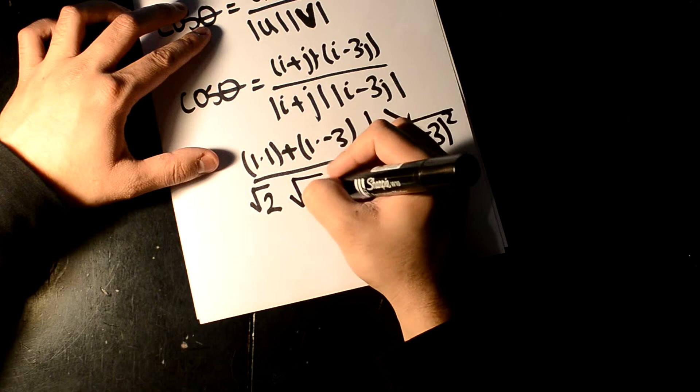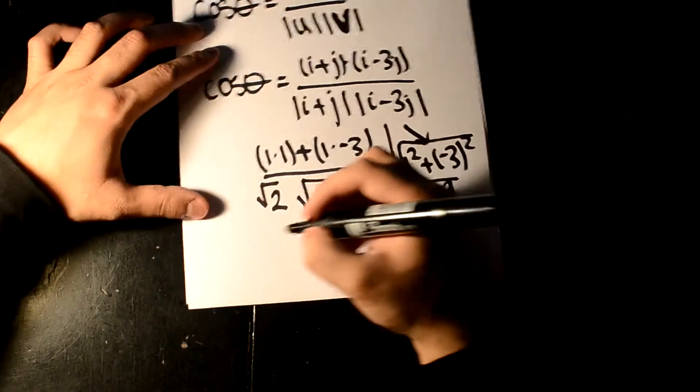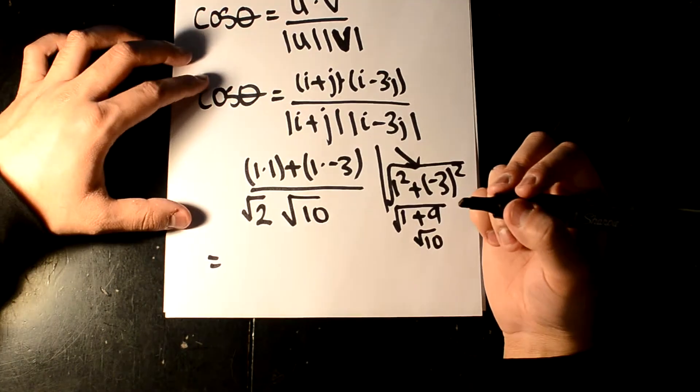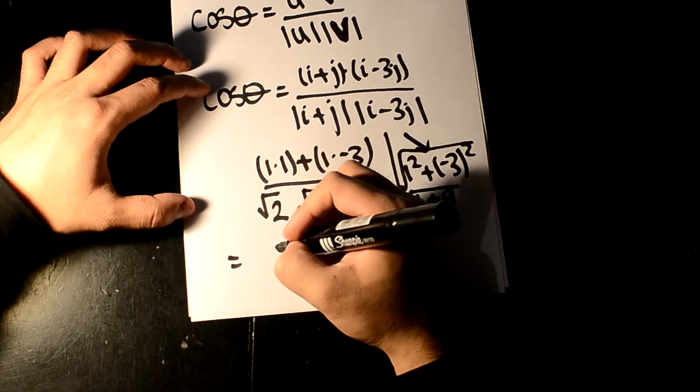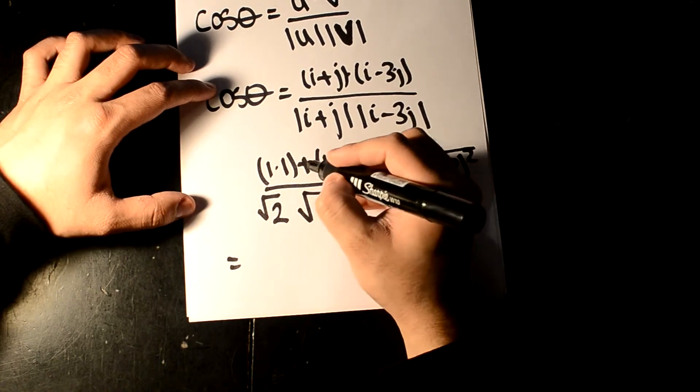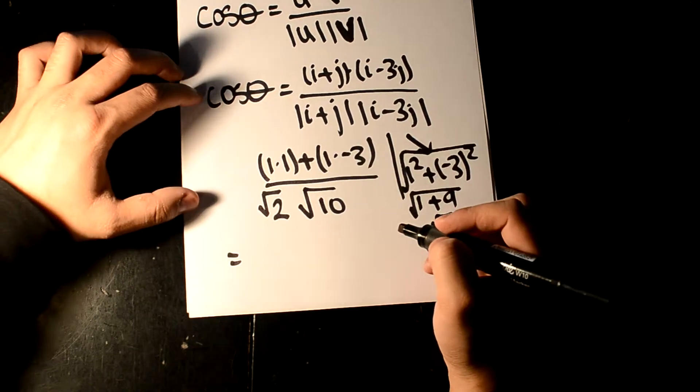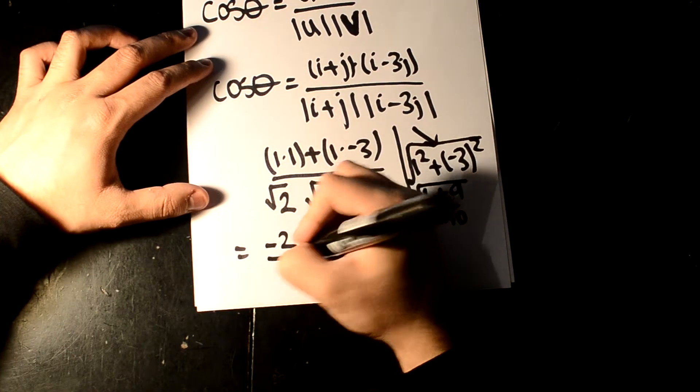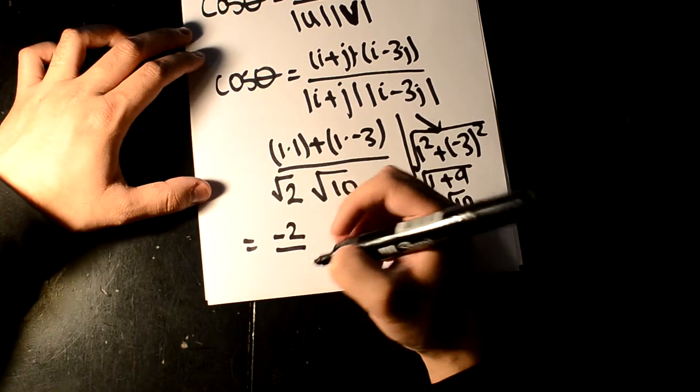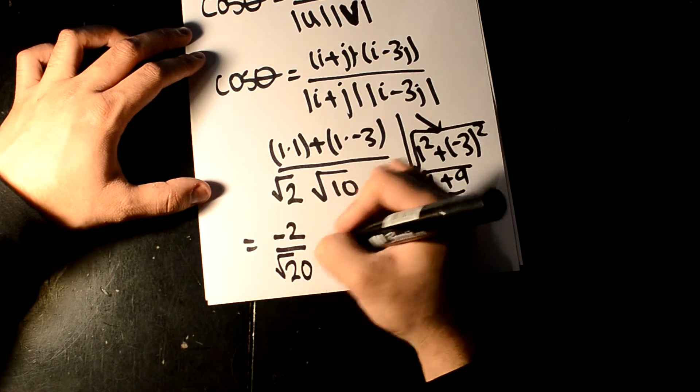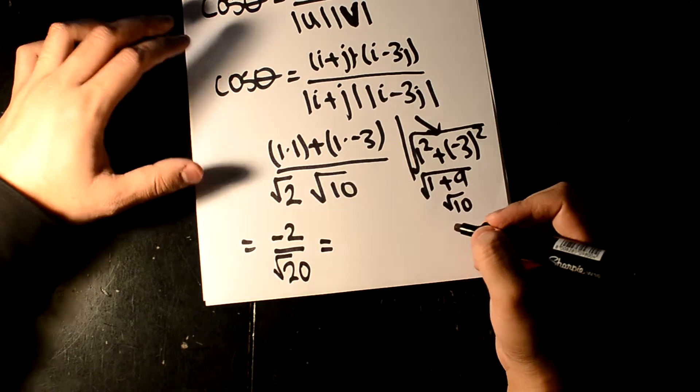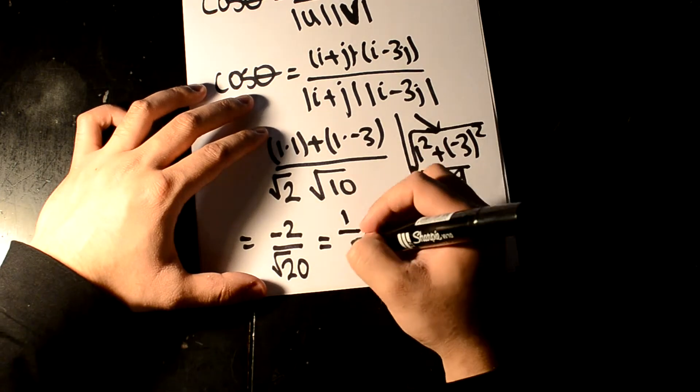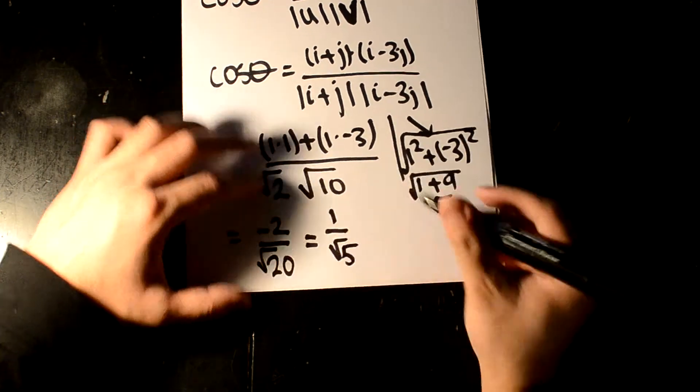So here we have a square root of 10. So let's simplify this even a bit more. And we will have 1 minus 3 on the top, which should equal minus 2. And then on the bottom, we have root 20, which then equals minus 1 over root 5.